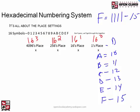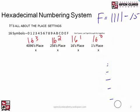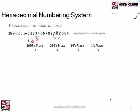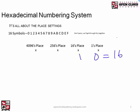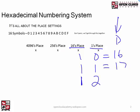Once we get to F, we've run out of symbols, so adding one more jumps us to the next place setting — the 16s place. The next number is 10 in hex, which equals 16 in decimal. Then 11 hex is 17 — that's 16 plus 1. Then 12 hex is 18 — 16 plus 2. Then 13 hex is 19 — 16 plus 3. You take whatever is in each position and multiply it by its place setting.